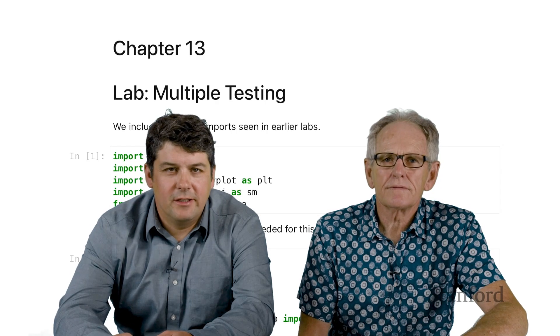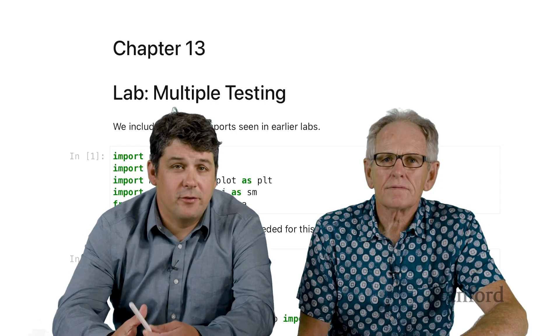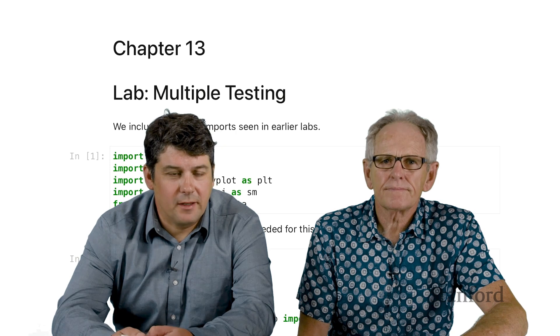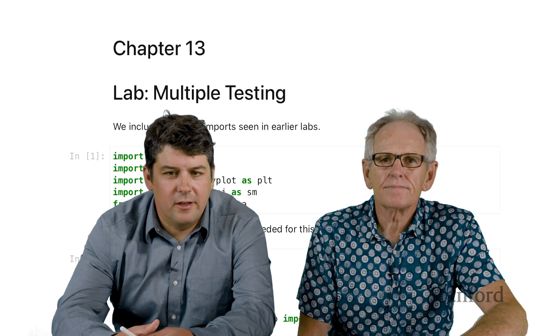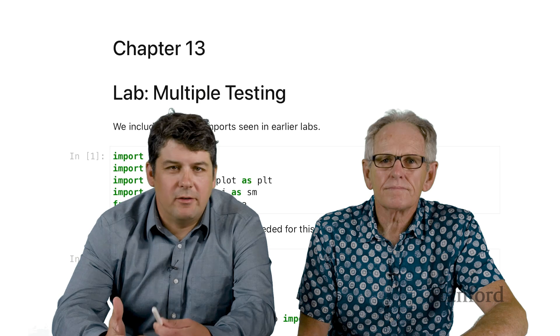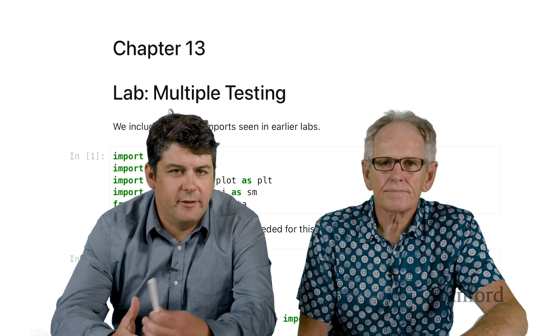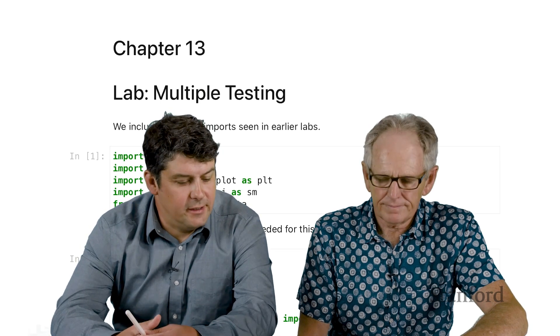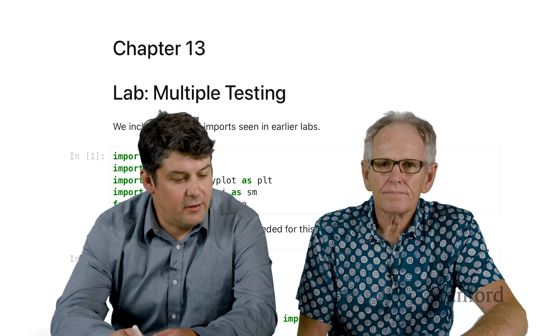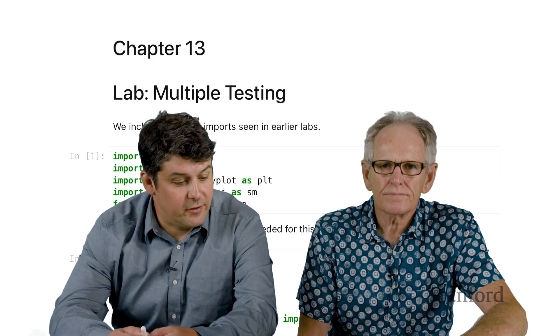Welcome back. Today we're going to go through the lab for Chapter 13, Multiple Testing. And we're going to focus on two main criteria for multiple testing, family-wise error rate and false discovery rate, as well as how to estimate things like false discovery rate.